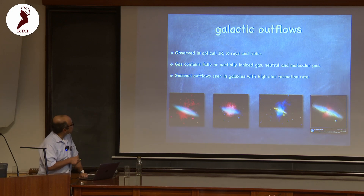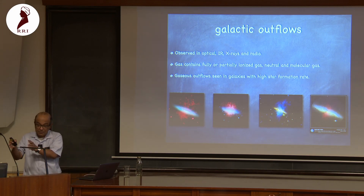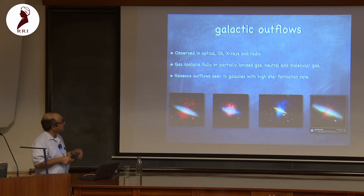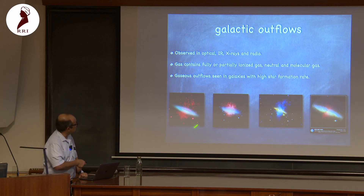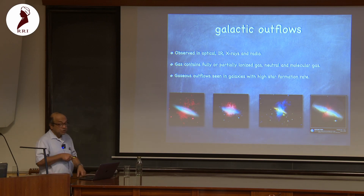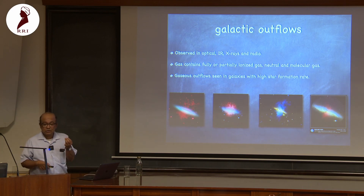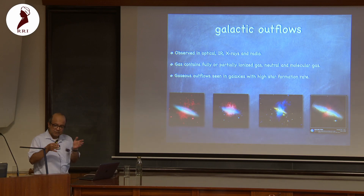Since these emissions come from gas at different temperatures, this gas contains all different kinds — fully ionized gas, partially ionized gas, neutral gas, even molecular gas. This is an image of carbon monoxide molecules in the same galaxy — molecules need to be shielded in very cold and dense clouds, just a few hundred degrees Kelvin. All this gas at different temperatures coexists in this outflowing gas.